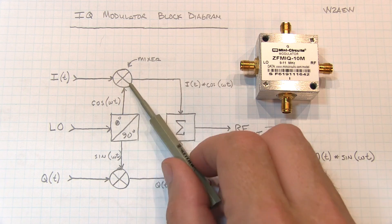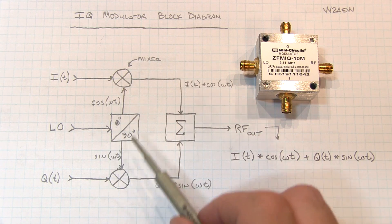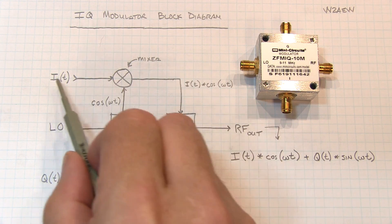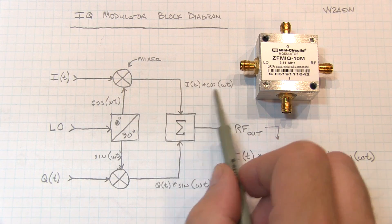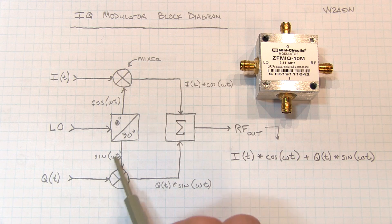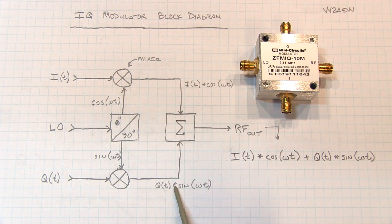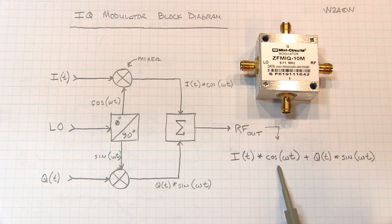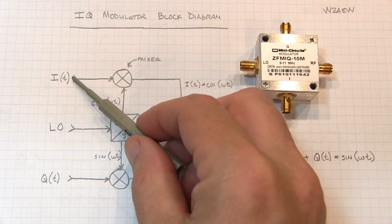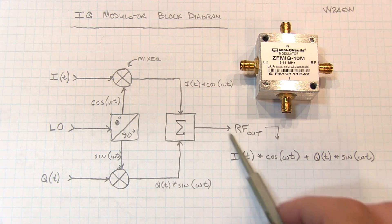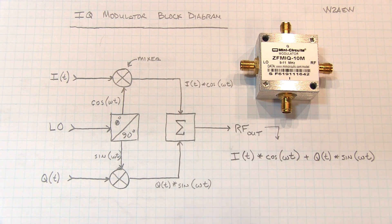Now the best way to understand the operation of the modulator is to consider these mixers as multipliers. So essentially here we've got the product of the in-phase LO and the I component, so I times cosine. And the output of this mixer is essentially Q times the quadrature LO, or the sine wave. So after the summation of those signals we have the sum of I times cosine and Q times sine. Now of course as the I and Q signals are varied over time, that's essentially what creates the modulated RF signal at the output here.